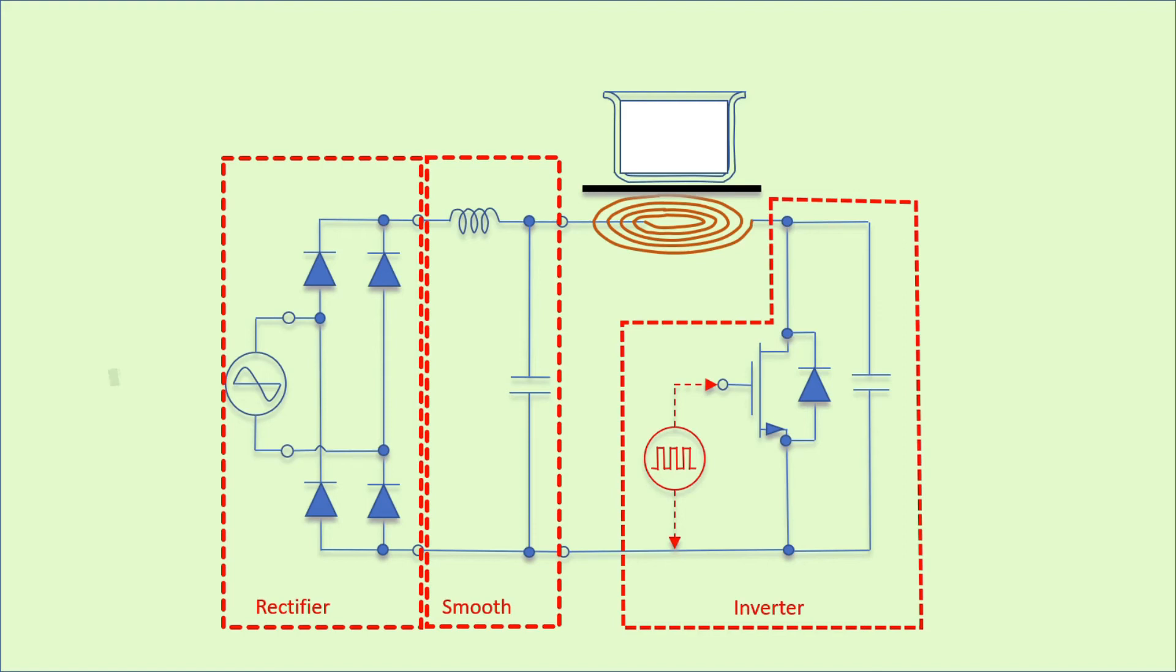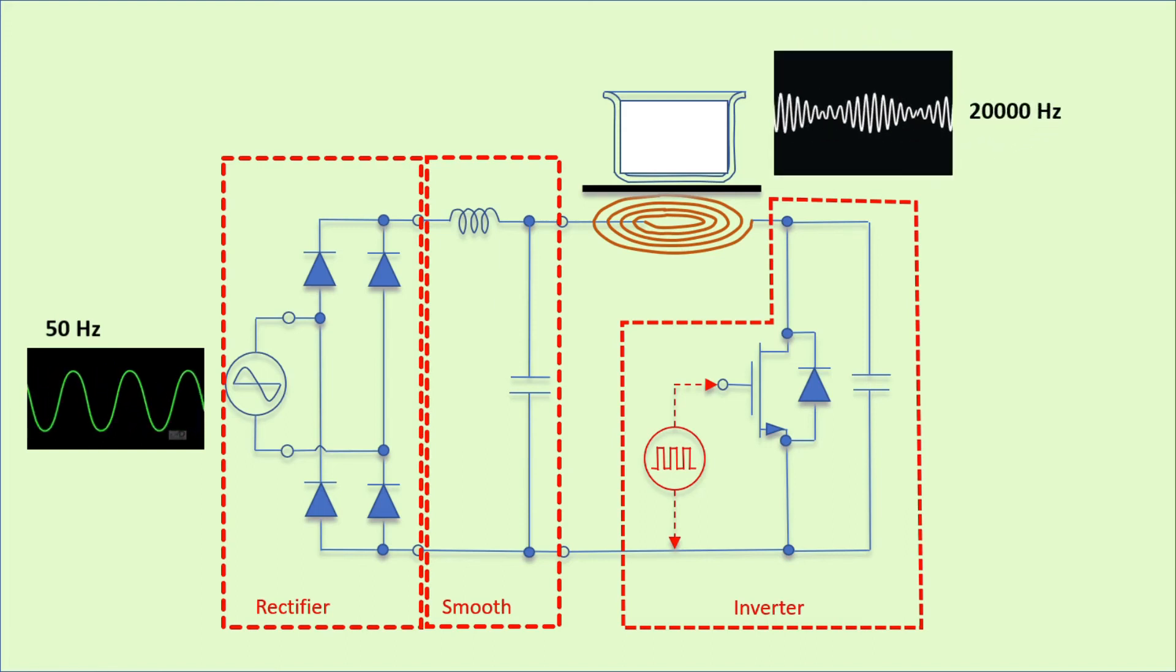In general, the circuit turns 50Hz input power supply into 20 to 30,000Hz oscillating current output onto the coil. Then the inductor converts the energy into heat in the pan, thanks to Faraday's law.